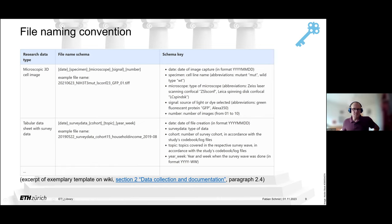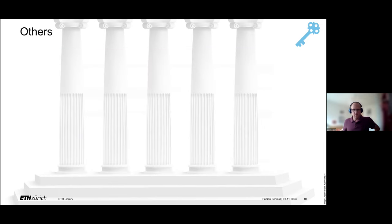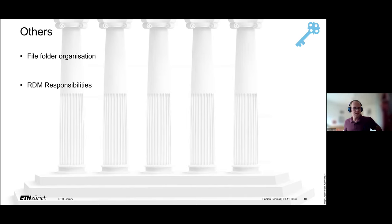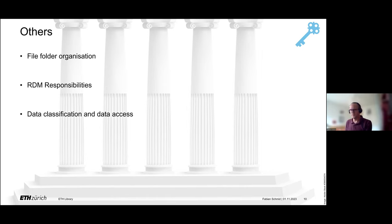This is also an excerpt from our template. Of course there are other components: file folder organization, and also defining responsibilities for research data management. Maybe there will be some general tasks that everybody has to do, but there might also be some specific ones where you assign responsibilities. You should also define which data you will classify at the different confidentiality levels at ETH, how data access will be regulated, and so on.